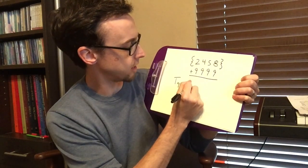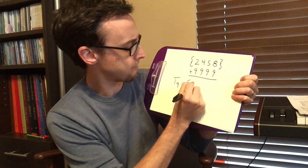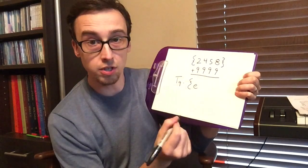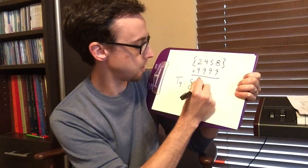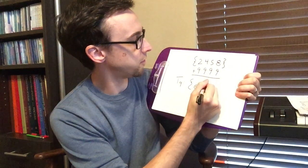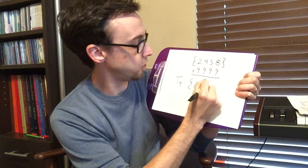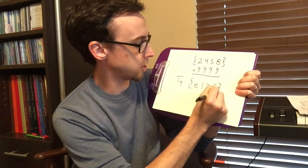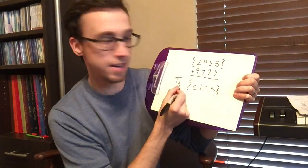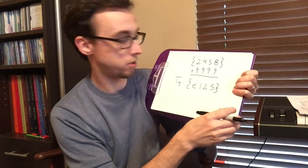So 2 plus 9 is E. Don't forget your curly bracket. 4 plus 9 is 13, so remember we're dealing with mod 12 math so 13 is equal to 1. 9 plus 5 is 14 or 2, and then 8 plus 9 is 17 or 5. So our transposition T9 is E, 1, 2, 5. It's already in normal order when we do that.